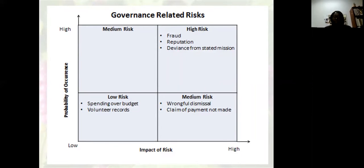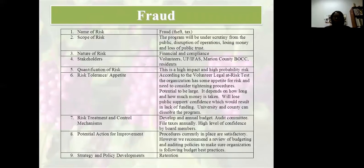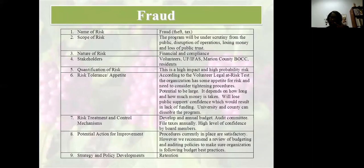For governance-related risks, we came up with high risks of fraud, reputation, and mission drift. Medium risks include wrongful dismissal and claim of payment not made. Low risks are spending over budget and volunteer records. For fraud — since we're handling money — there's a tool called the Volunteer Legal at Risk Tests by the nonprofit risk management center. To determine risk tolerance, an entity needs to look at outcome measures of its key objectives. For us, generating revenue and customer satisfaction are key. If our target for customer satisfaction rating is 90%, we may tolerate outcomes between 88% and 95%.